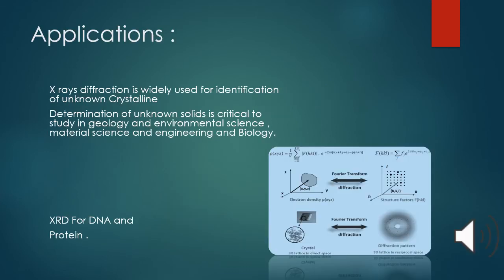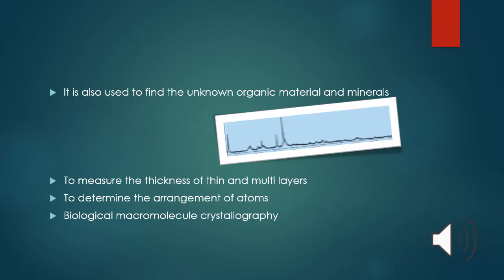Applications. X-ray diffraction is widely used for identification of unknown crystalline materials. Determination of unknown solids is critical to study in geology and environmental science, materials engineering and biology. XRD for DNA and protein - it contains the crystal and goes to the diffraction pattern and electron density through Fourier transform diffraction then structure factor. It is also used to find unknown organic materials and minerals, to measure thickness in thin multilayers, to determine arrangement of atoms. Biological macromolecular crystallography. These are the steps which used by XRD diffraction.